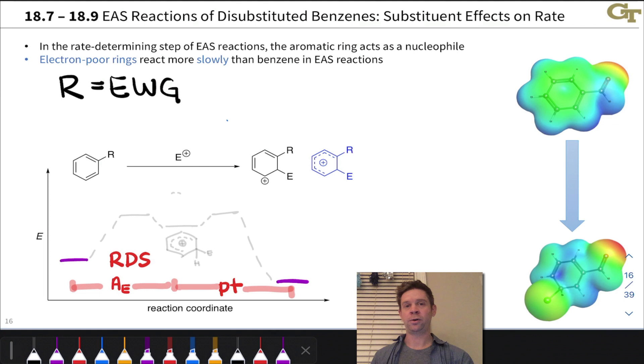Everything we said previously about the reaction mechanism still applies. The nucleophile is the aromatic ring in the rate-determining step, the first step that destroys aromaticity. E-plus is the electrophile. The electron flow looks like this: it's association of an electrophile to the aromatic pi system, A sub E.